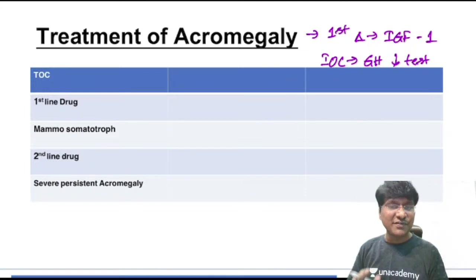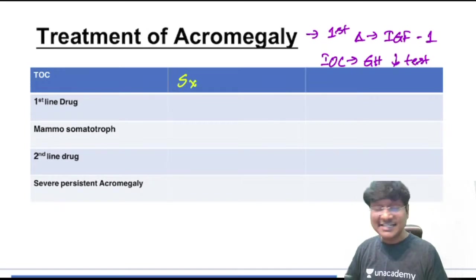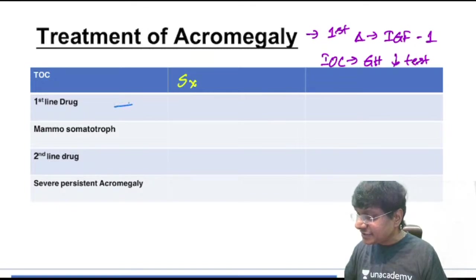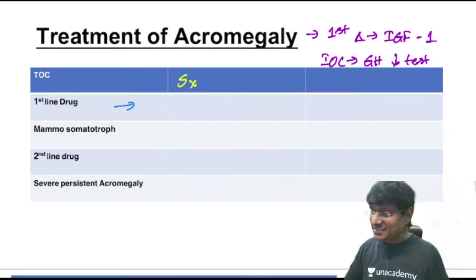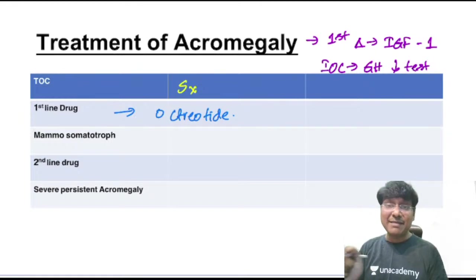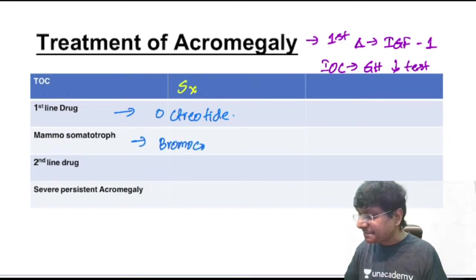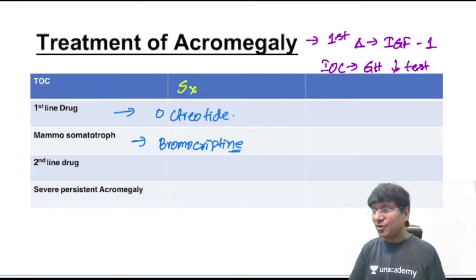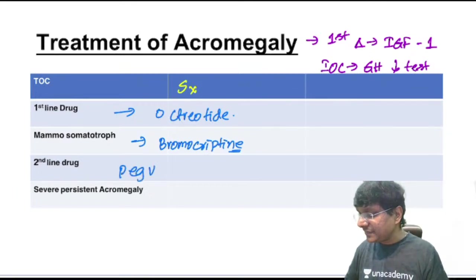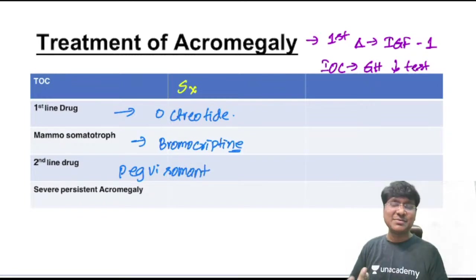Treatment of choice in acromegaly is surgical resection of the pituitary adenoma (micro or macro). If the patient cannot have surgery, the first line drug is a somatostatin analog — octreotide. If it is a mammosomatotroph type pituitary adenoma, bromocriptine is given.